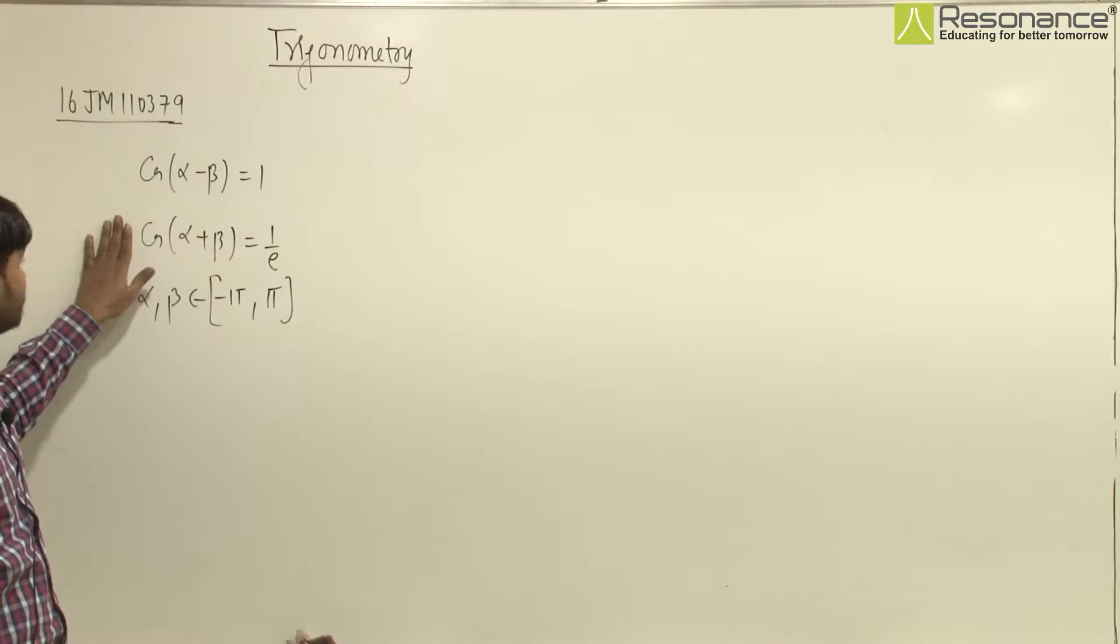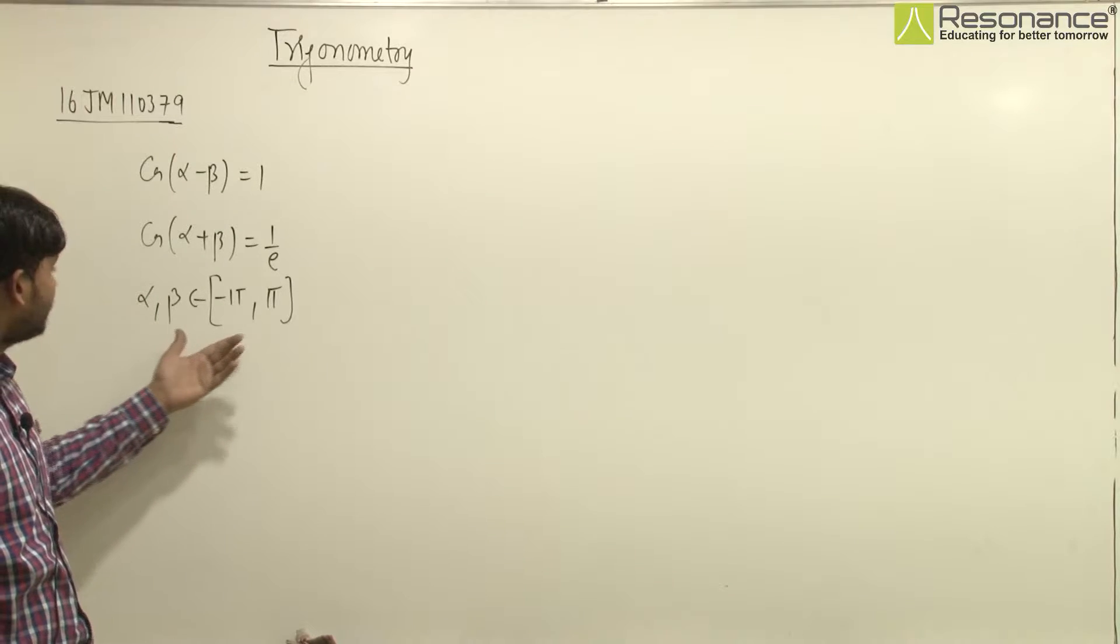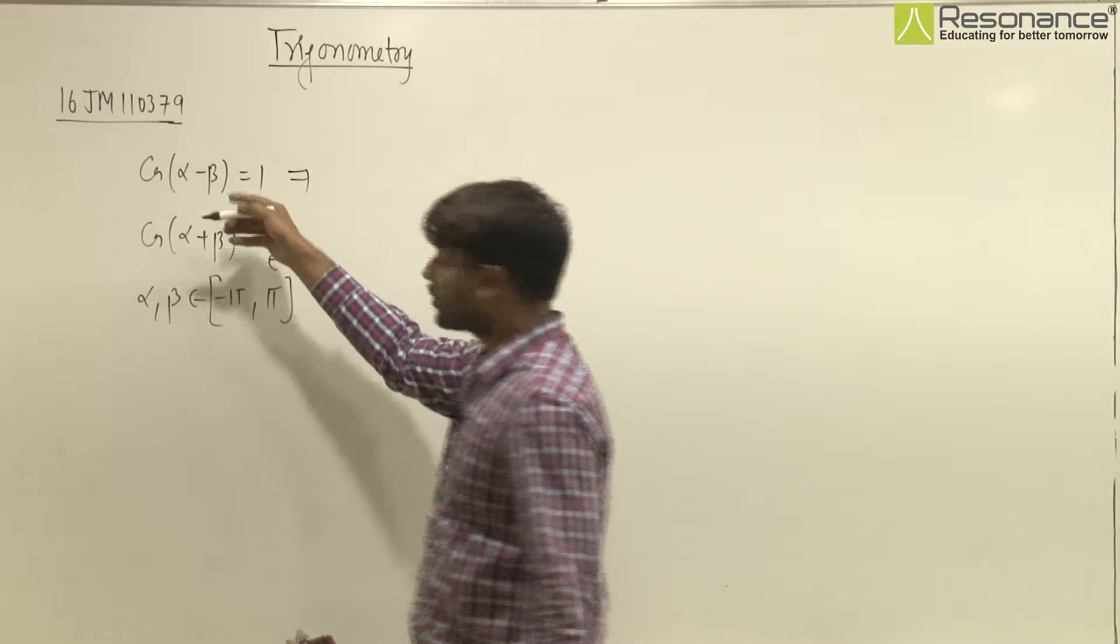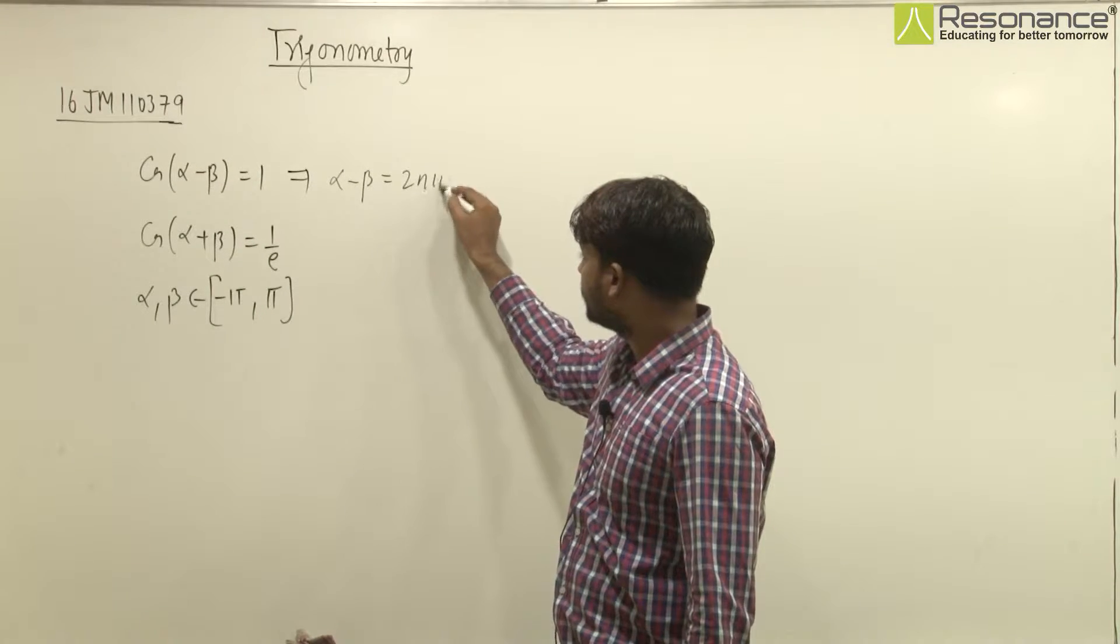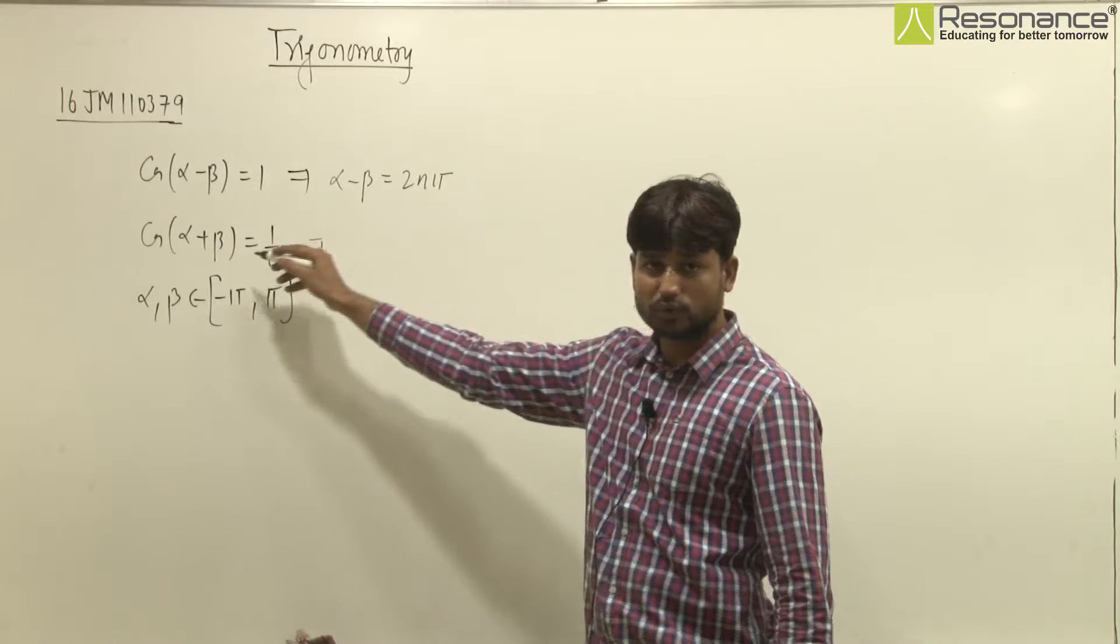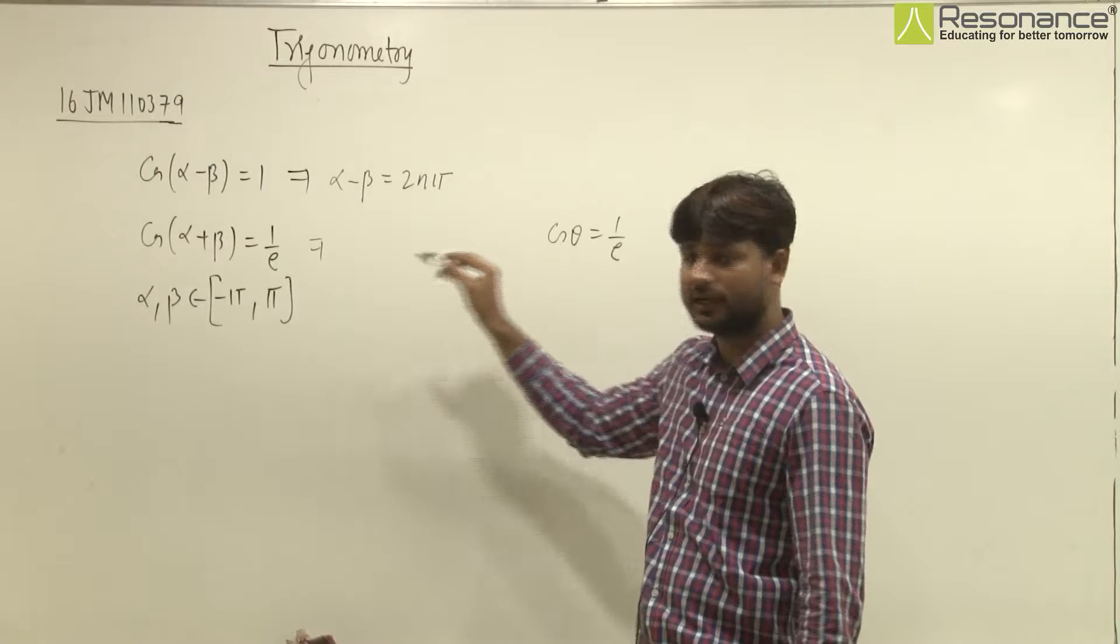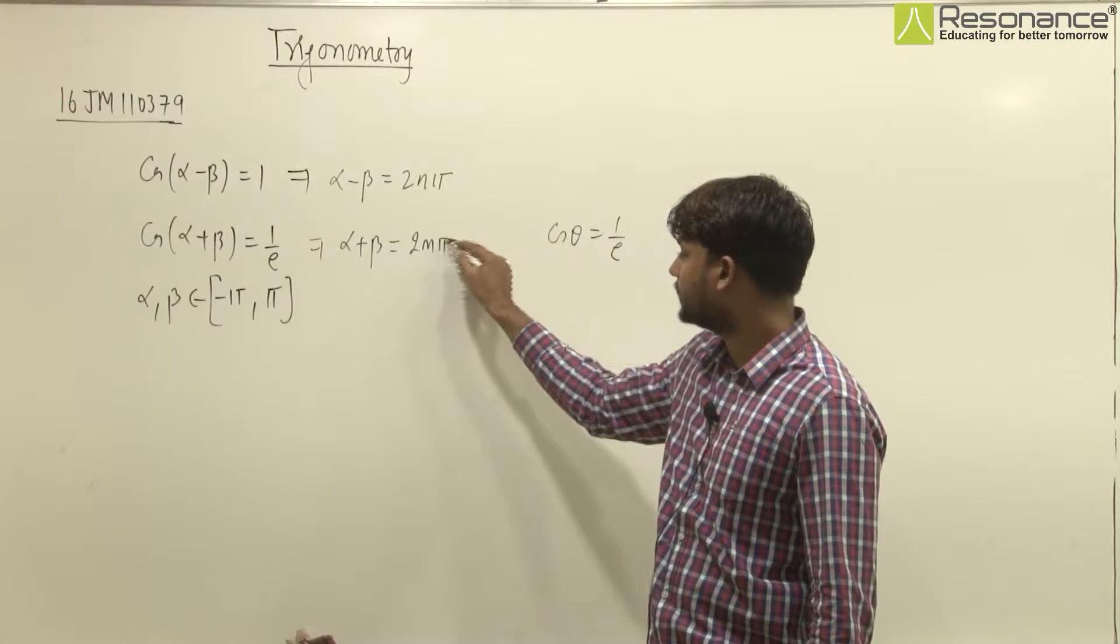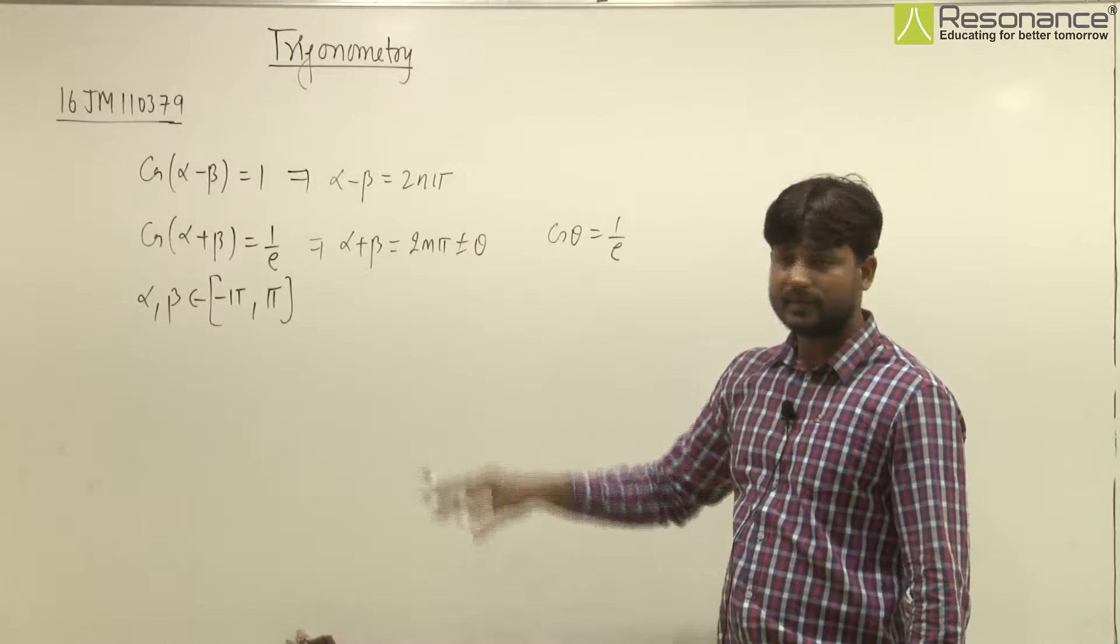In this question we have given these two equations and we have to find the number of ordered pairs of alpha and beta in this interval. First, this equation cos theta equal to 1, so alpha minus beta equals 2n pi. Similarly, the second equation, if we take cos theta equal to 1 upon e, so alpha plus beta will be equal to 2m pi plus minus theta. So n and m belong to integers.